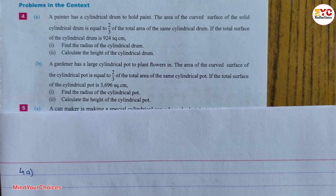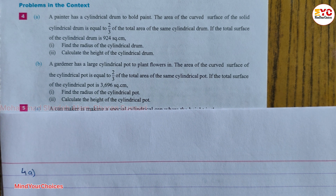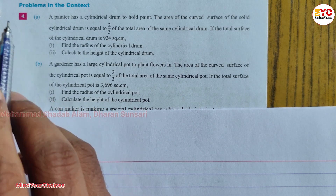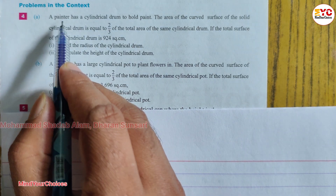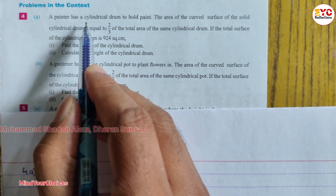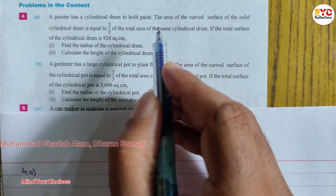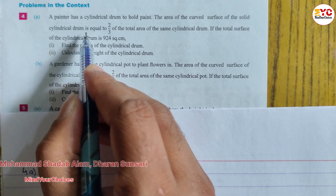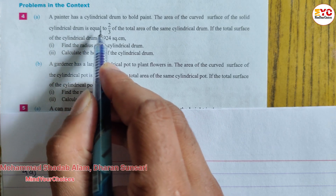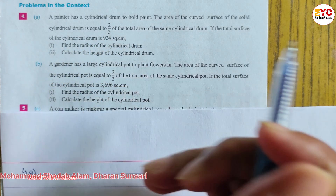Hello everyone. In this video, we will have a question about 2 or 3, and then we will have a question about 4. Question about 4: the painter has a cylindrical drum to hold paint. The area of the curved surface of a solid cylindrical drum is equal to 2/3 of the total surface area.